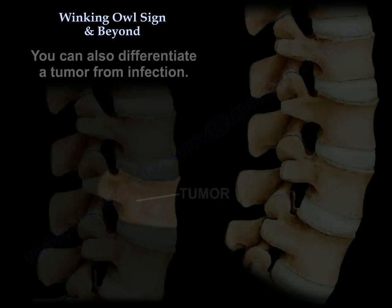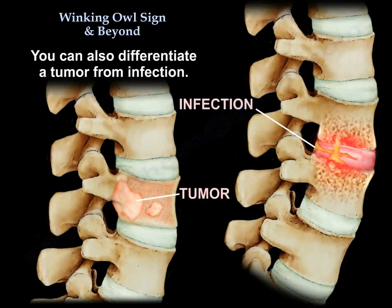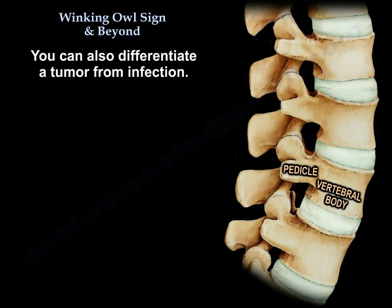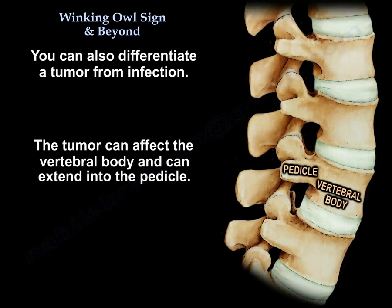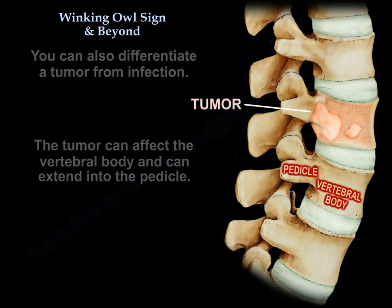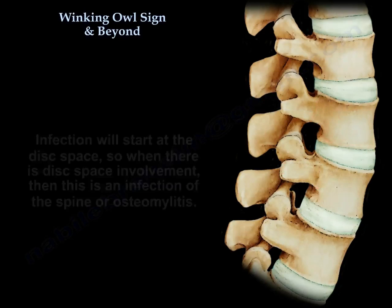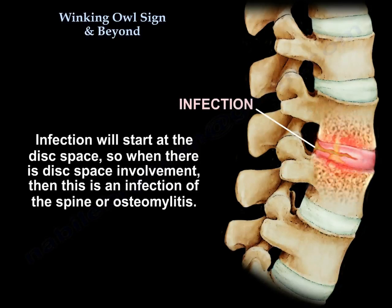You can also differentiate tumor from infection. Here is the body and here is the pedicle of the spine. The tumor can affect the body and can extend into the pedicle. So if you have pedicle involvement, it's probably a tumor, and not osteoporosis, and not an infection. The infection will start at the disc space, so when there is disc space involvement, then this is an infection of the spine, or osteomyelitis.